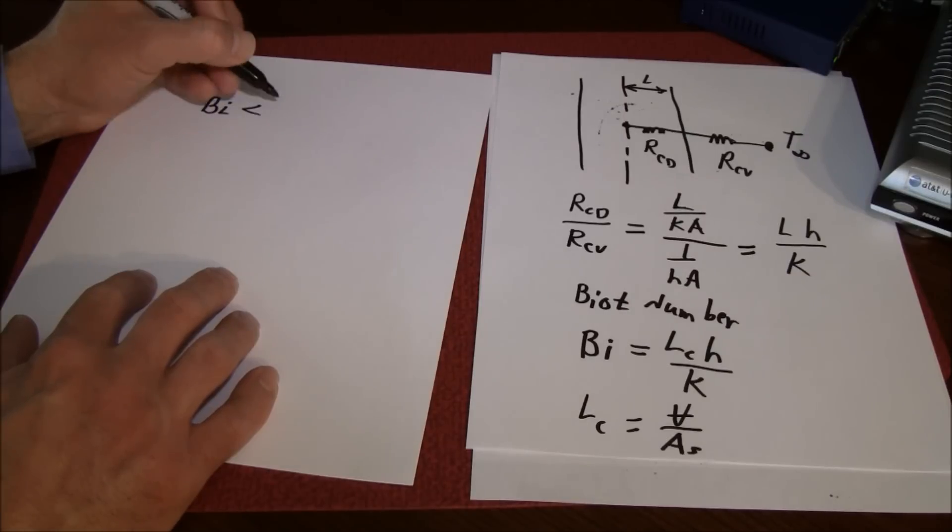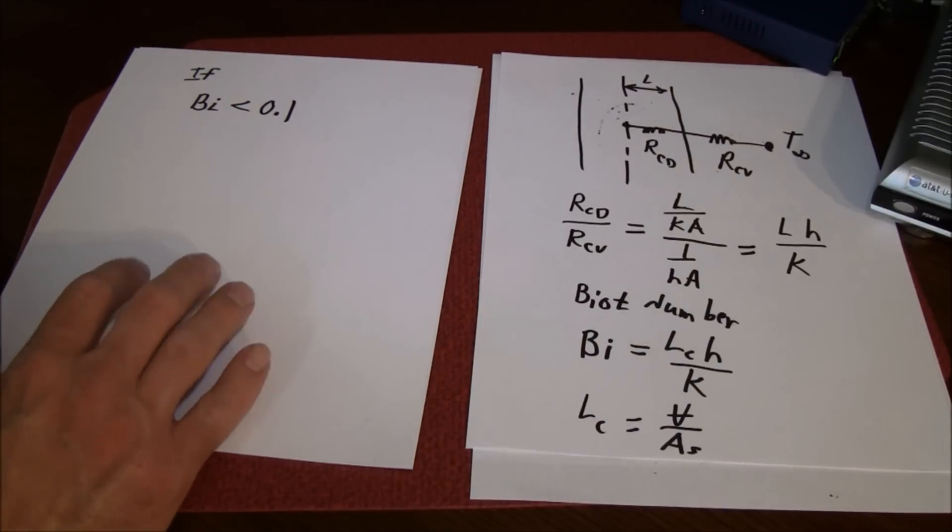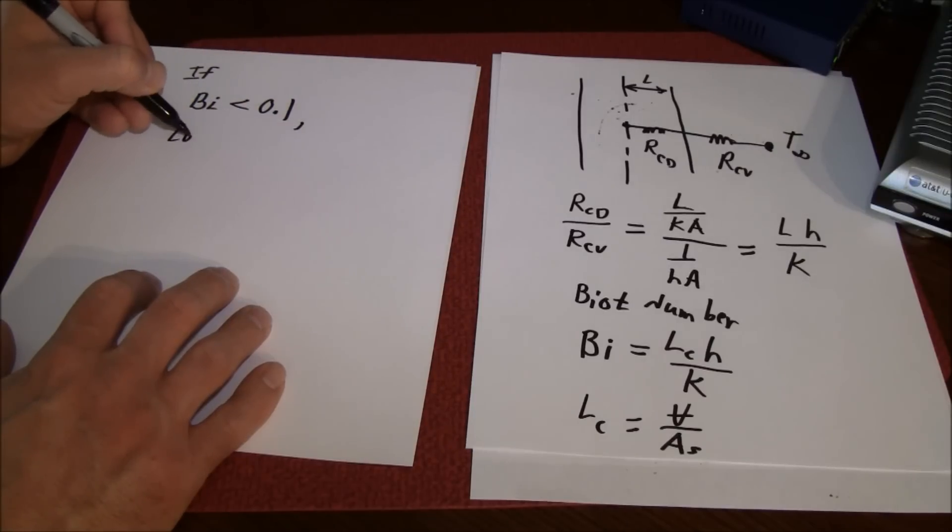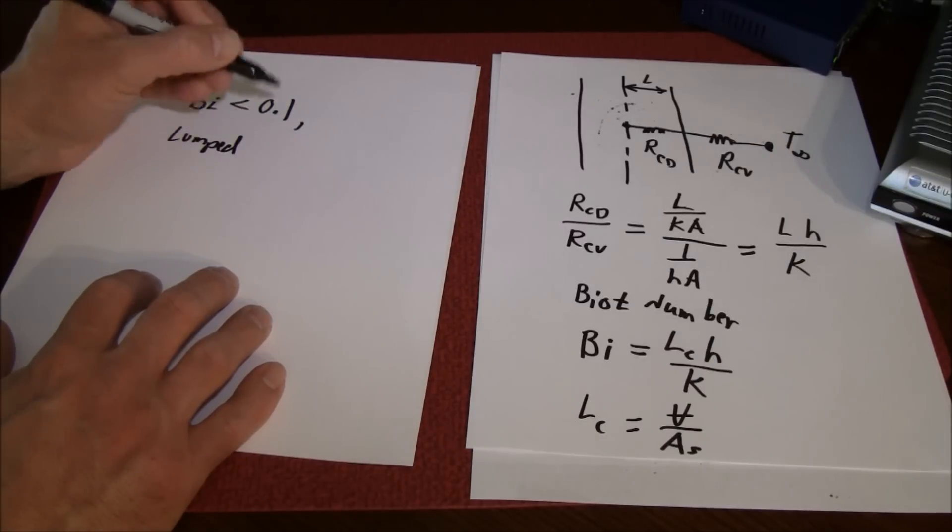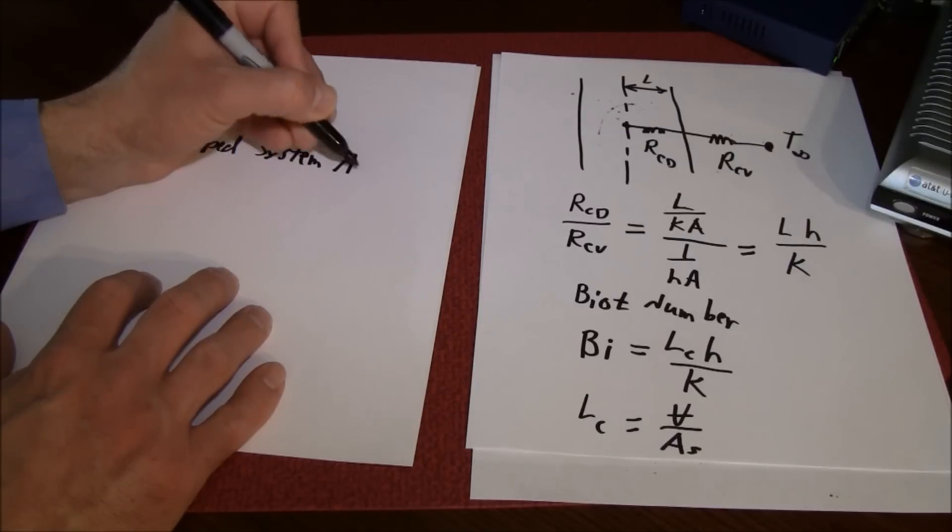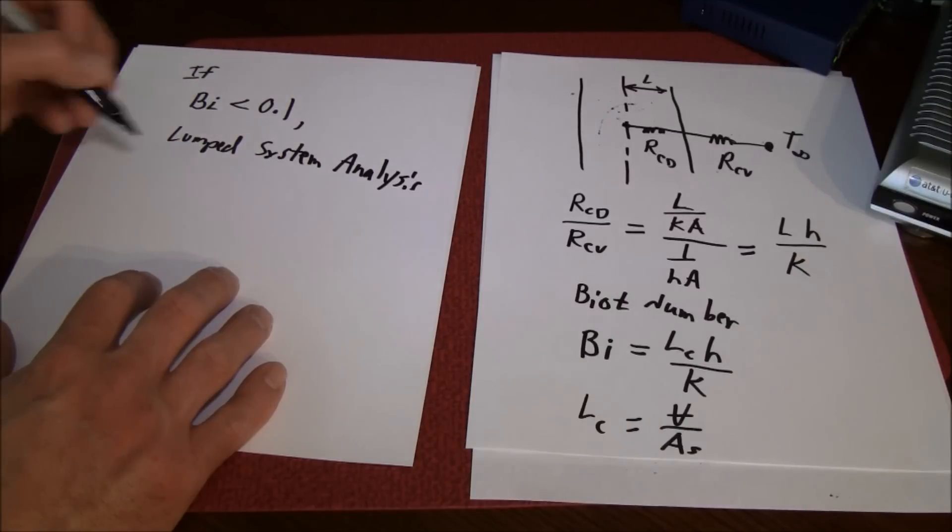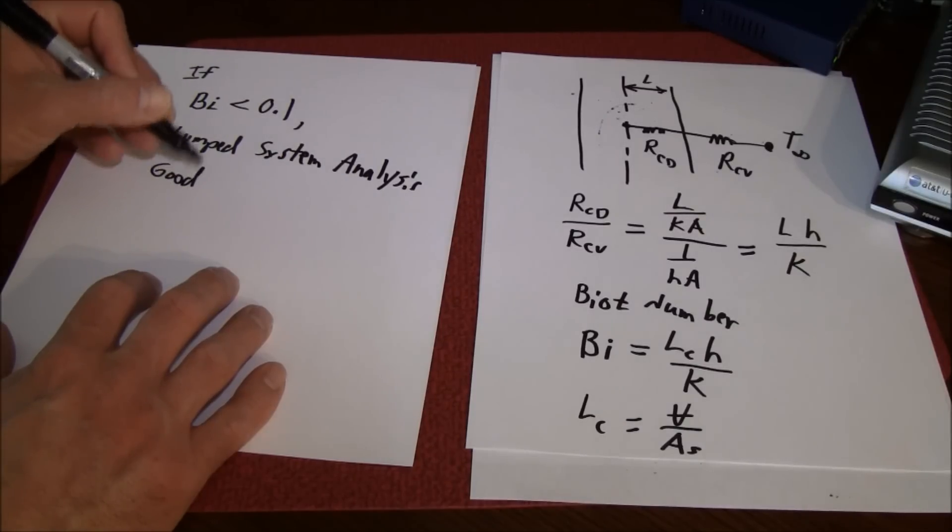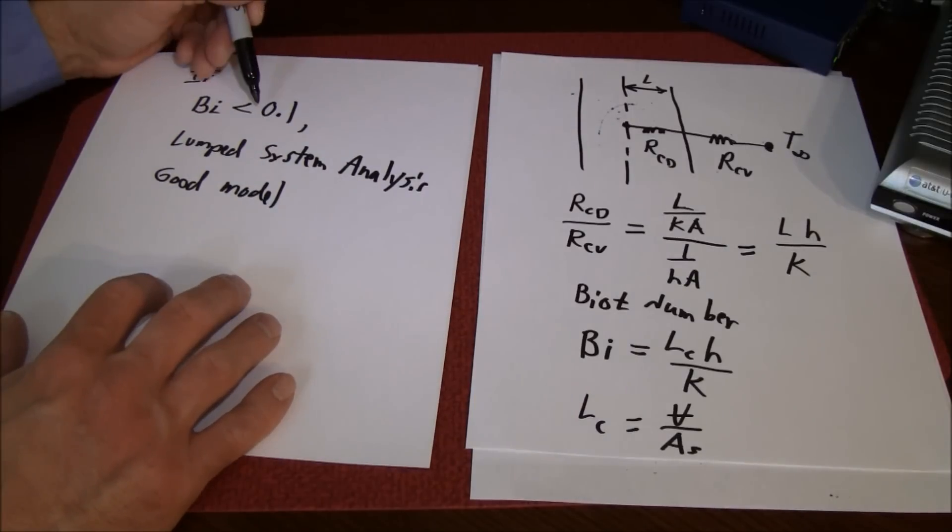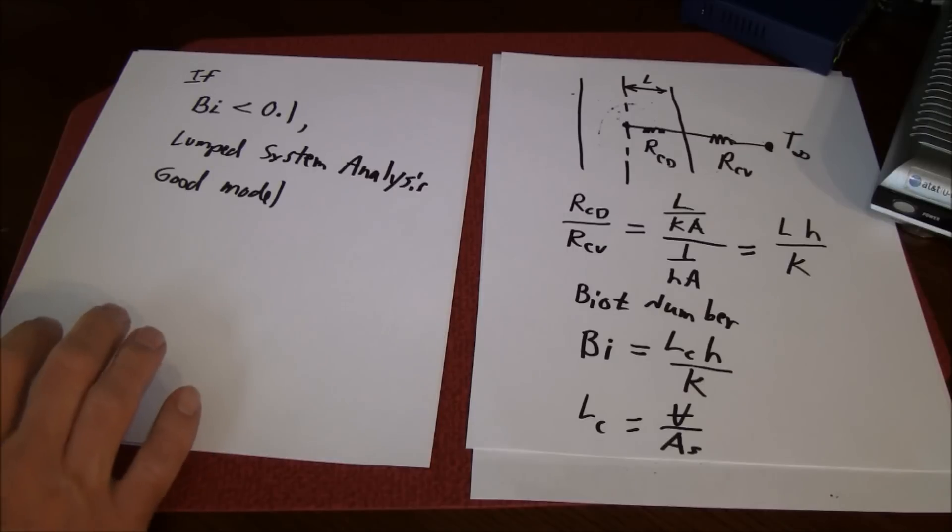The usual accepted criterion is that if the Biot number is less than 0.1, then the lump system analysis is a good model. When the Biot number is less than 0.1, the temperature will not change in your object by more than five percent.